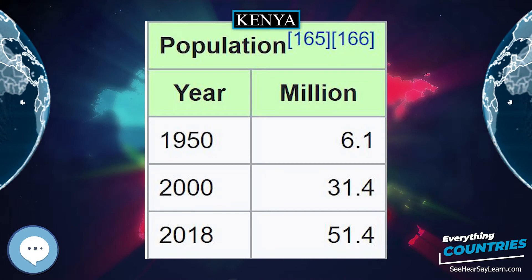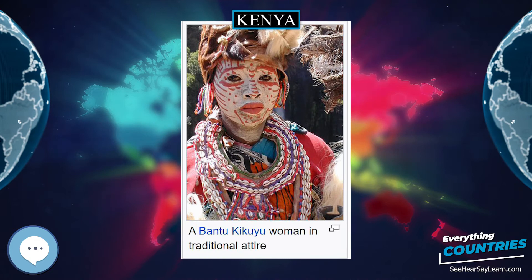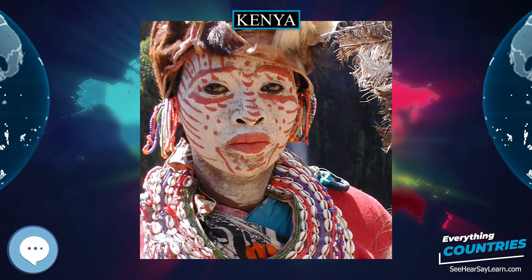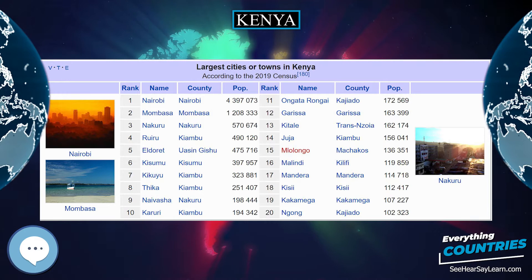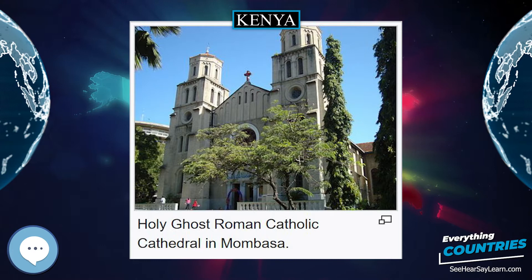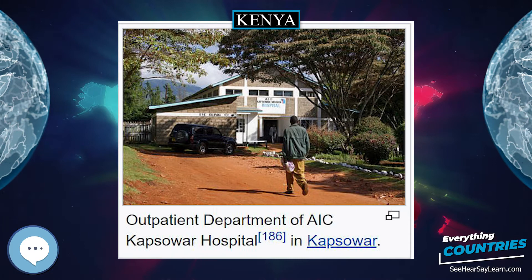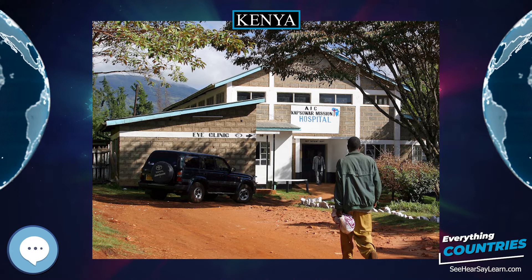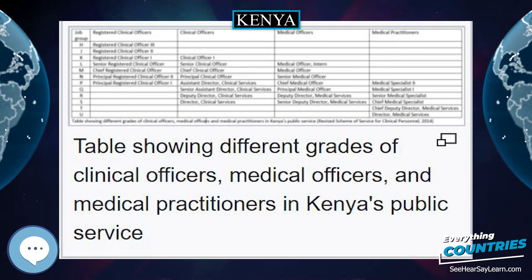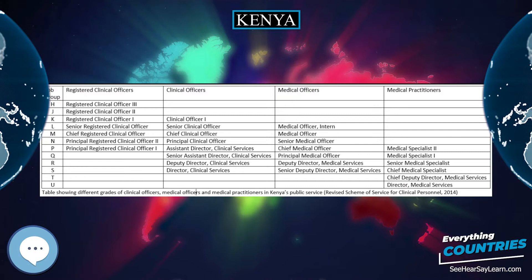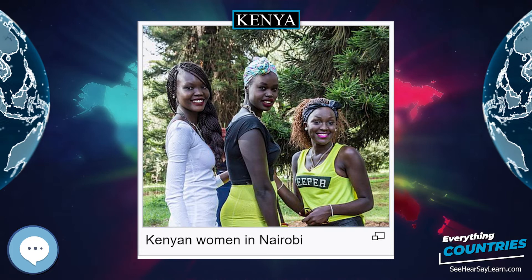Kenya is divided into 47 semi-autonomous counties that are headed by governors. These 47 counties now form the first order divisions of Kenya. The smallest administrative units in Kenya are called locations. Locations often coincide with electoral wards and are usually named after their central villages or towns. Many larger towns consist of several locations; each location has a chief appointed by the state. Constituencies are an electoral subdivision, with each county comprising a whole number of constituencies. An interim boundaries commission was formed in 2010 to review the constituencies, and in its report it recommended the creation of an additional 80 constituencies. Previous to the 2013 elections, there were 210 constituencies in Kenya.